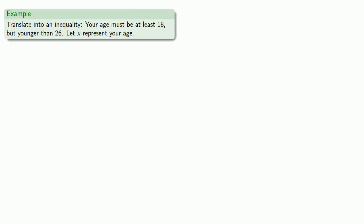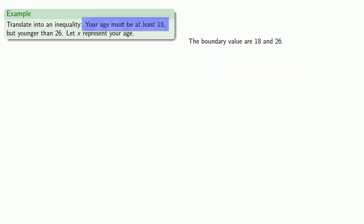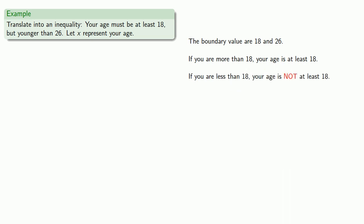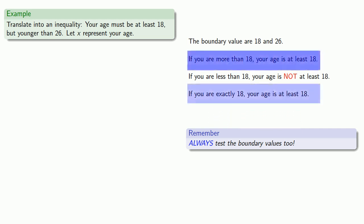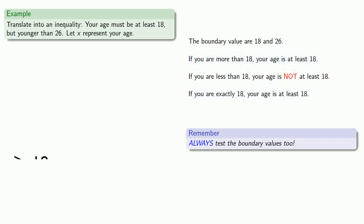For example, let's translate into an inequality: your age must be at least 18 but younger than 26. The boundary values are 18 and 26. The constraint about 18 is that your age must be at least 18. If you are more than 18, your age is at least 18. If you are less than 18, your age is not at least 18. Remember to always check the boundary values — if you are exactly 18, then your age is at least 18. So we want your age to be greater than or equal to 18, and so the first inequality is x ≥ 18.